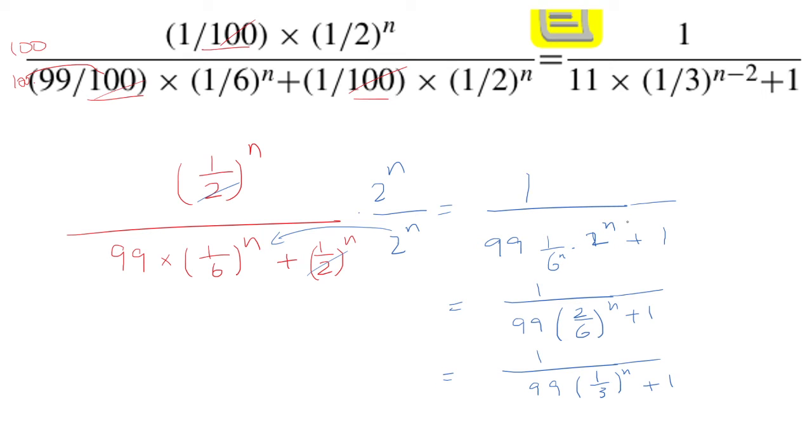Let's see what we have here. So we have the 1. We need an 11, but we have a 99 here. And then a 1 here, but we have (1/3)^n minus 2.